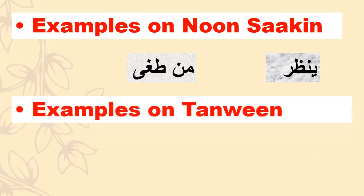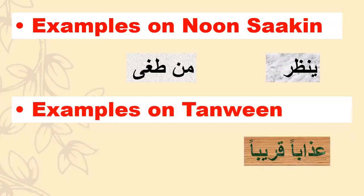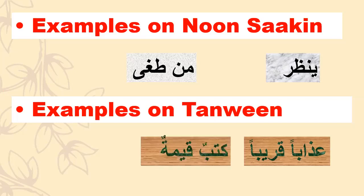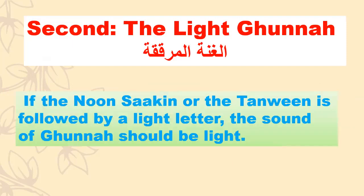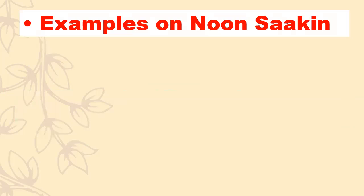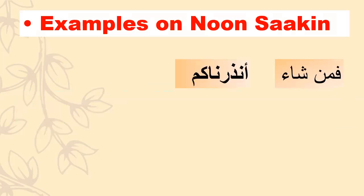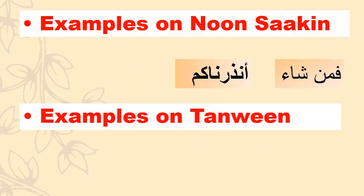For example, with the Nun Sakin: [heavy example]. For example, with the Un-Tanwin: [heavy example]. Second, the light Gunna — if the Nun Sakin or the Tanwin is followed by a light letter, the sound of Gunna should be light. For example, the Nun Sakin: [light example]. For example, the Un-Tanwin: [light example].